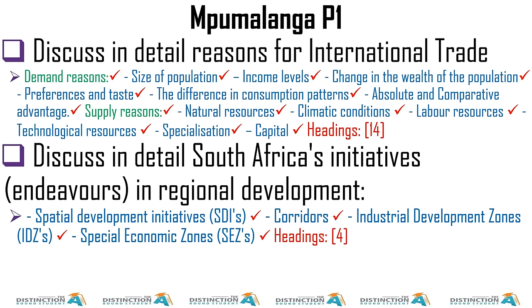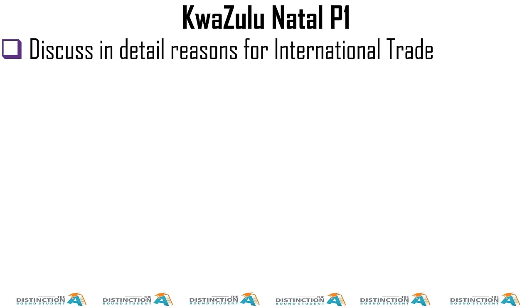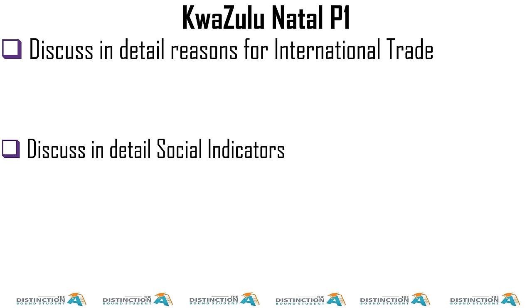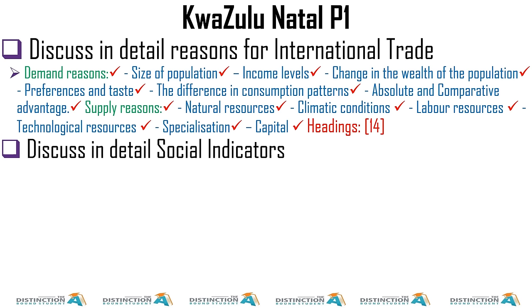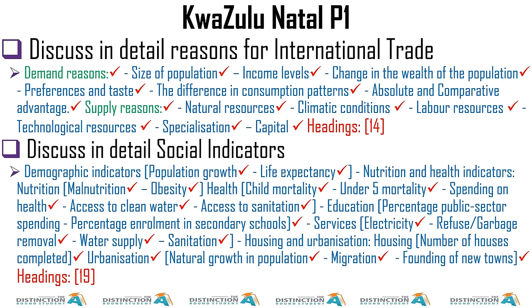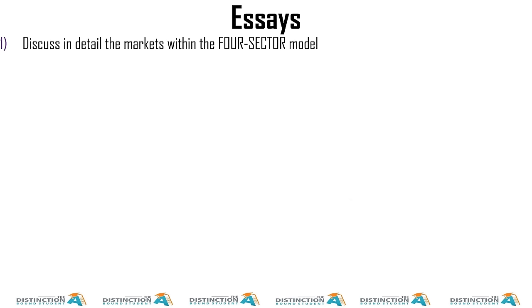Make sure you know all the essays — I'll show you them after Paper 1 and rank my recommendations. In KwaZulu-Natal: reasons for international trade appeared, and South Africa's social indicators appeared — both already seen. So that covers all provinces for our 2023 prelim exams. Demand reasons, supply reasons, DIHAN.